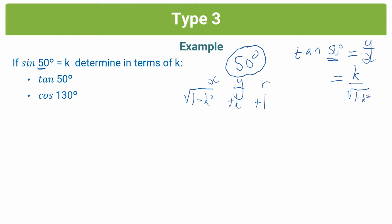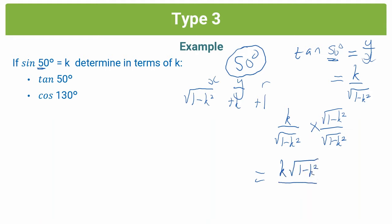If you want to rationalize the denominator — because you shouldn't leave a surd in the denominator — take k over root(1 minus k squared) and multiply by root(1 minus k squared) over root(1 minus k squared), effectively multiplying by 1. That gives k times root(1 minus k squared) over (1 minus k squared). That's good mathematical etiquette. Note: if you didn't rationalize, your answer would still be correct.